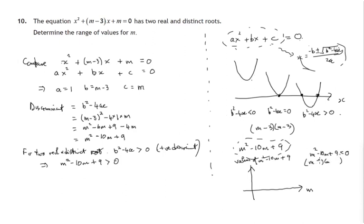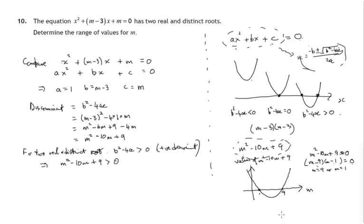Does m squared minus 10m plus 9 factorize? Yes — using 9 and 1: to get minus 10m we need minus 9m minus 1m, and negative 9 times negative 1 gives positive 9. So (m minus 9)(m minus 1) equals zero, meaning m equals 9 or m equals 1. The values of this quadratic expression are zero when m is 1 or m is 9, and we expect a parabola shape.